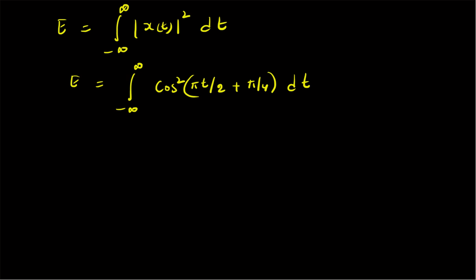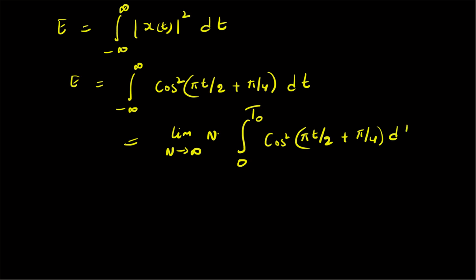Since the cosine function is a periodic signal, this integral can be broken down as a sum of integrals over all individual periods. That means it will equal the limit as n tends to infinity of n times the integral over one fundamental period T₀ of cos²(πt/2 + π/4) dt. Even though this integral over one period is finite, n is infinite, so the limit goes to infinity.